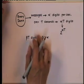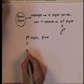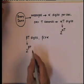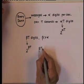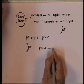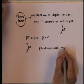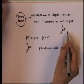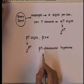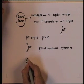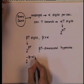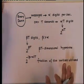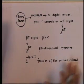Now, because beta times t digits can form 2 raised to beta times t distinct patterns, which are the vertices of a beta times t dimensional hypercube, and we have only 2 raised to alpha times t super messages, we are utilizing only a 2 raised to minus (beta minus alpha) times t fraction of the vertices. The remaining vertices are deliberately unused in order to combat noise.